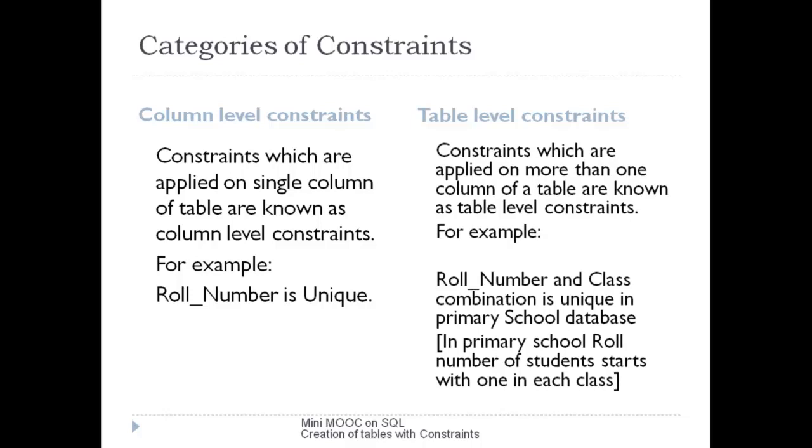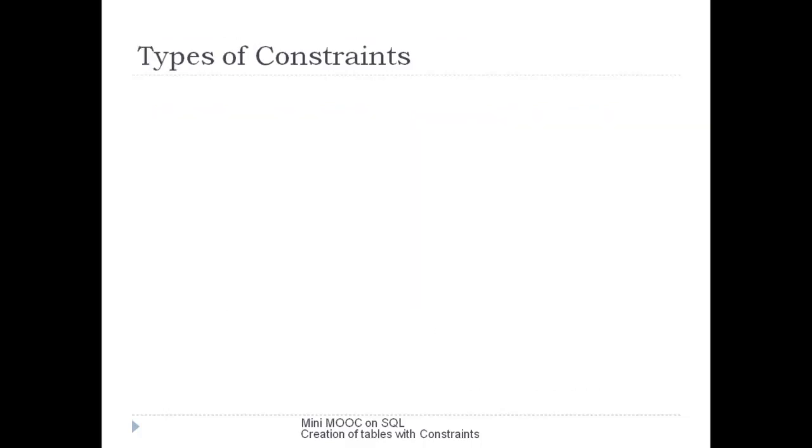more than one column of a table, then it is a table level constraint. For example, in primary schools, in a class every roll number starts with one. Then the combination of roll number and class is unique, and it is a table level constraint. There are six types of constraints, and these are NOT NULL, UNIQUE, PRIMARY KEY, CHECK,